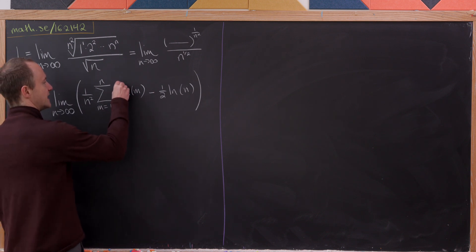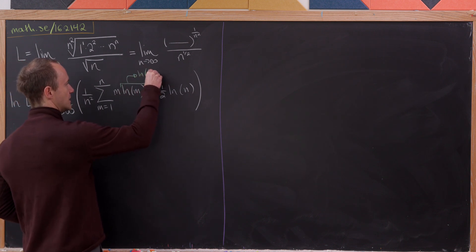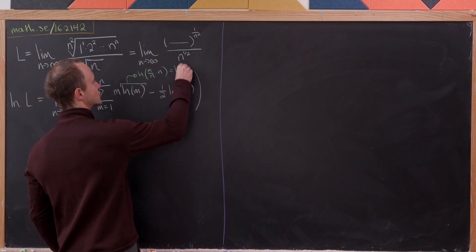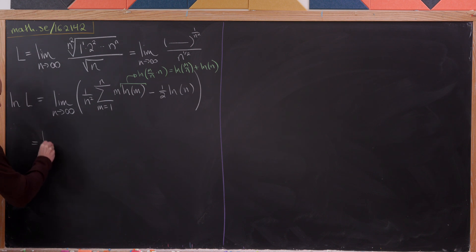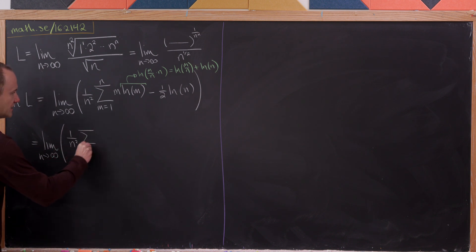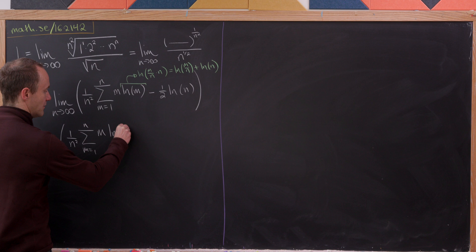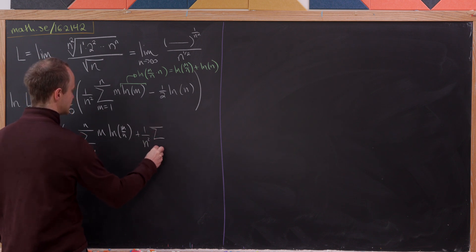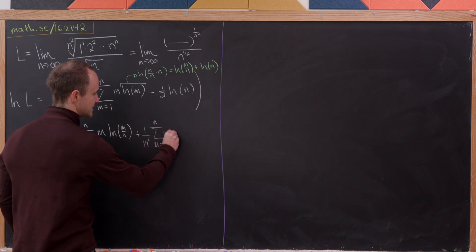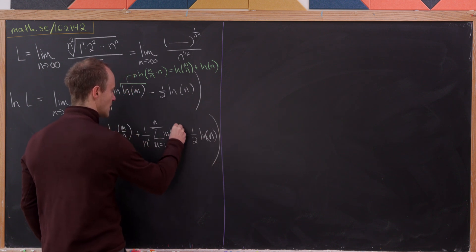Now we're going to do a bit of a trick. We can take this natural log of m and write it as the natural log of (m/n · n), which we can split apart into the natural log of m over n plus the natural log of n. So we'll have our limit as n goes to infinity of 1 over n-squared times the sum as m goes from 1 to n of m times the natural log of m over n, plus 1 over n-squared times the sum as m goes from 1 to n of m times the natural log of n, minus one-half natural log of n.